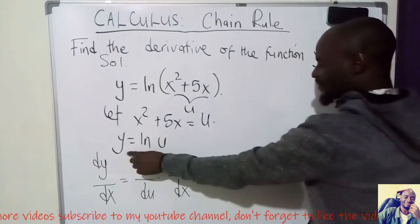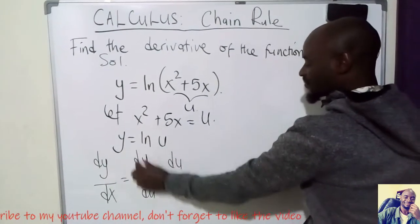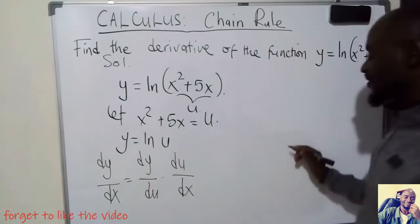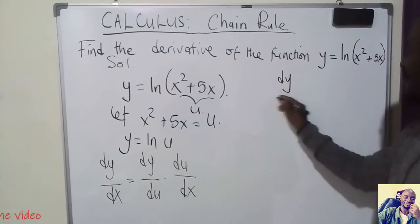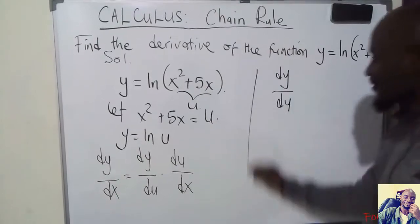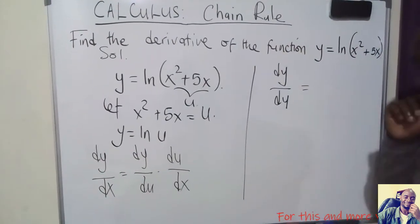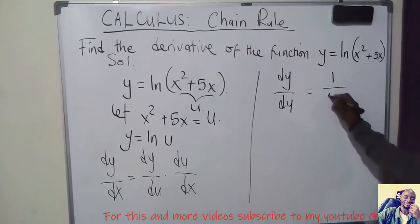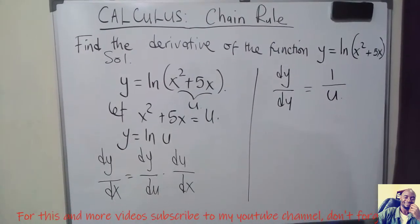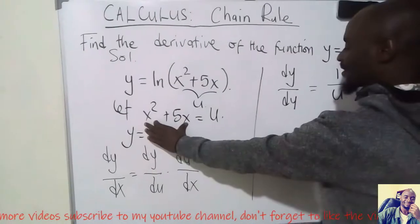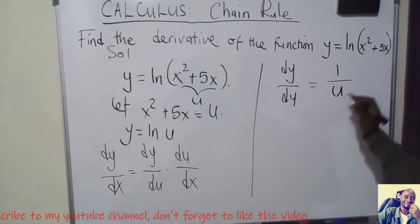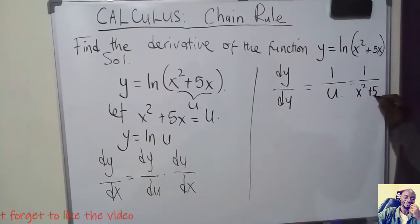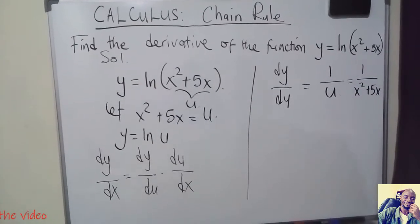We have y = ln(u), so we find dy/du. When you differentiate ln, it equals 1 over the function you are differentiating. Since the value of u is x² + 5x, this gives dy/du = 1/(x² + 5x).